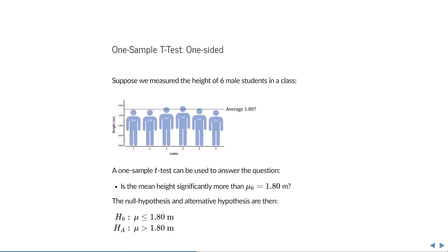Using the same example I've shown you before, a one-sample t-test can be used to answer the question: is the mean height of these men significantly more than 1.8 meters? The null hypothesis is then that it is less than or equal to 1.8 meters, and once we stop believing in the null hypothesis, we accept the alternative that the mean must be greater than 1.8 meters.